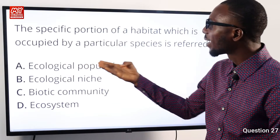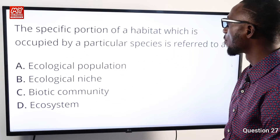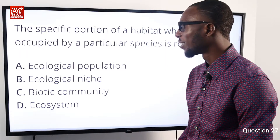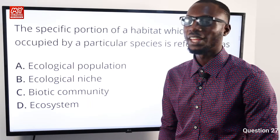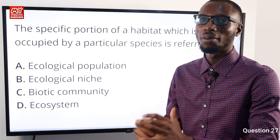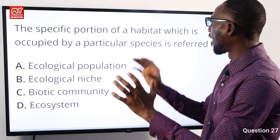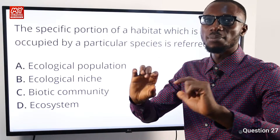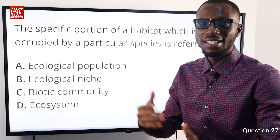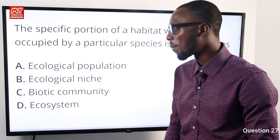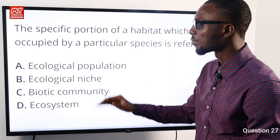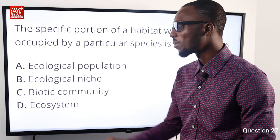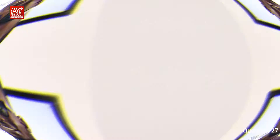Question 27: The specific portion of a habitat which is occupied by a particular species is referred to as the ecological niche — that particular part where organisms live and interact with the environment. So option B is very correct.